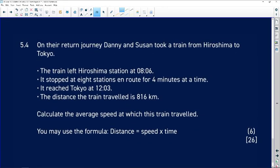On their return journey, Danny and Susan took a train from Hiroshima to Tokyo. The train left Hiroshima at 8:06, it stopped at eight stations en route for four minutes at a time, it reached Tokyo at 12:03. The distance the train traveled was 816 kilometers.